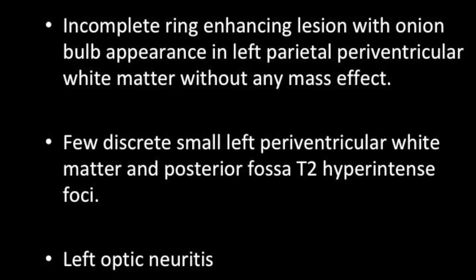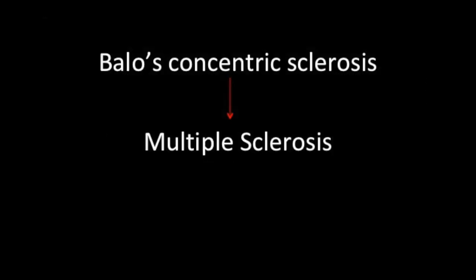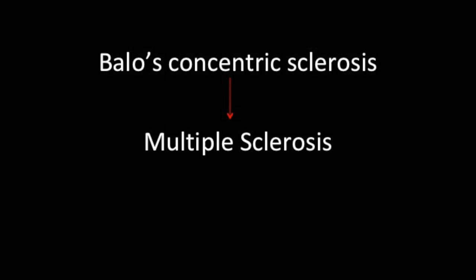These classical imaging features are suggestive of Baló's concentric sclerosis with probably associated multiple sclerosis. Baló's concentric sclerosis is a demyelinating inflammatory disease and is considered a variant of multiple sclerosis. Sometimes you can get other features of multiple sclerosis associated with it, as were seen in our case.